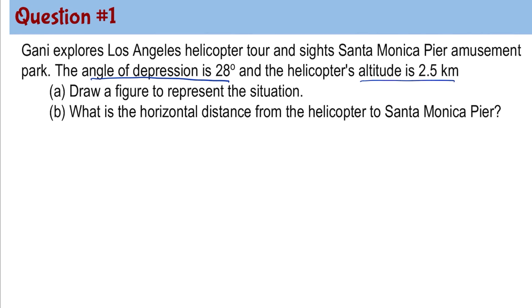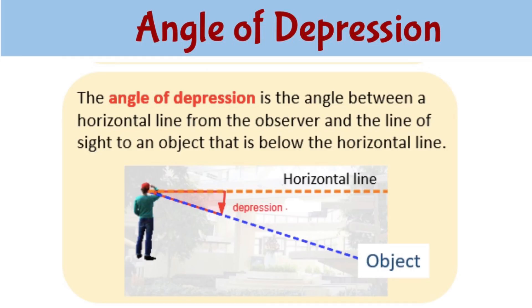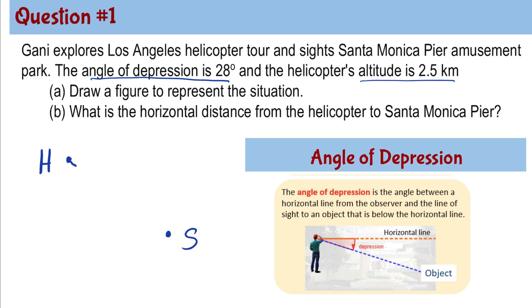To draw a figure to represent the situation, let's assume that point H is where the helicopter is and point S is the Santa Monica Pier. The angle of depression is the angle between a horizontal line from the observer and the line of sight to an object that is below the horizontal line. Connecting point H to point S is referred to as the line of sight, and the angle formed by the horizontal line and the line of sight is what we call the angle of depression.